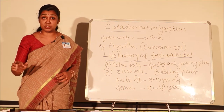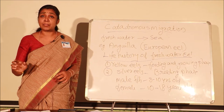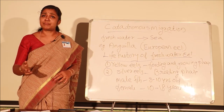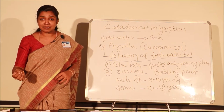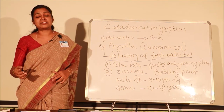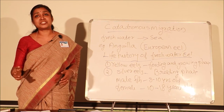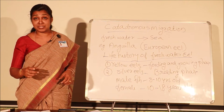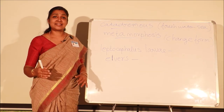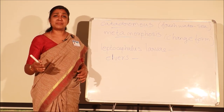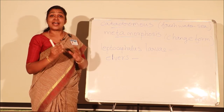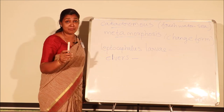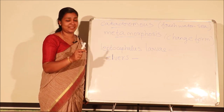It is believed that the eel travels 3,000 to 4,000 kilometers, crossing the Atlantic Ocean, reaching the West Bermuda area. When it reaches West Bermuda, it spawns at a depth of 400 to 500 meters. After spawning, the parent dies. The eggs are spawned and the young ones undergo metamorphosis.